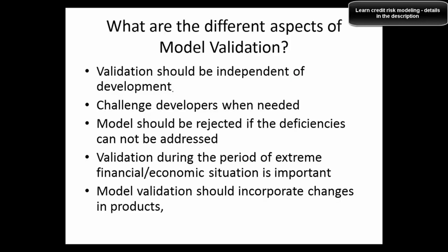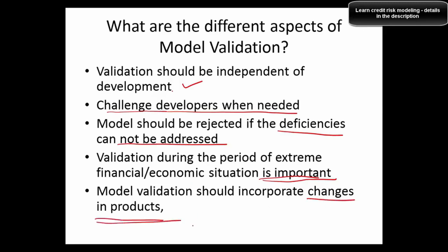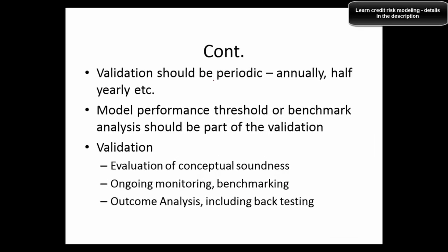What are the different aspects of model validation? Validation should be independent of development — the development team and validation team must be separate, with an independent team challenging the model developer when needed. Models should be rejected if deficiencies cannot be addressed. Extreme financial and economic situations must be considered, not just business-as-usual. Model validation should incorporate changes in products. Validation should be periodic — annually or more frequently — depending on budget and regulatory requirements.